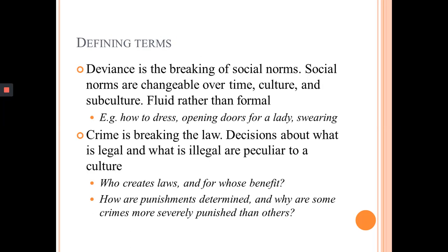Moving on to defining terms — we have two main terms to get our heads around today: deviance and crime. Deviance takes into account an element of statistics — the concept of the norm. In sociology, where this idea comes from, the norm is simply a common pattern. It's not a statement of moral worth. It doesn't imply that normal is good, or healthy, or desirable — simply that this is what most people do.